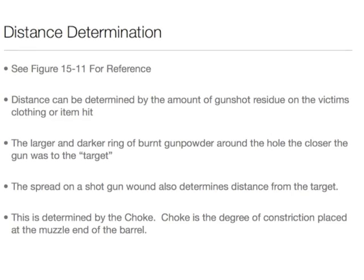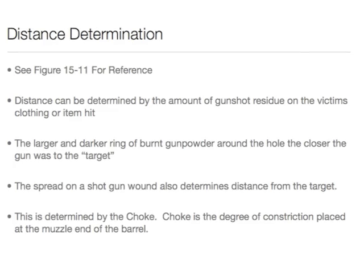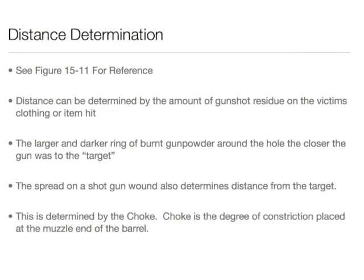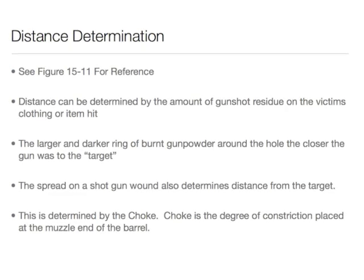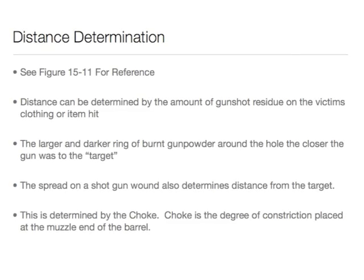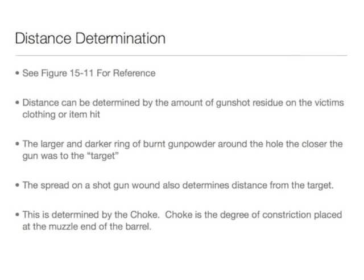Distance can be determined by using the amount of gunshot residue on the victim's clothing or the item that was hit. The larger and darker the ring of gunpowder around the hole, the closer the gun was to the target. For shotguns, the spread of the shotgun wound also determines the distance from the target. Sometimes, if the gun is choked down, it will make a smaller pattern.